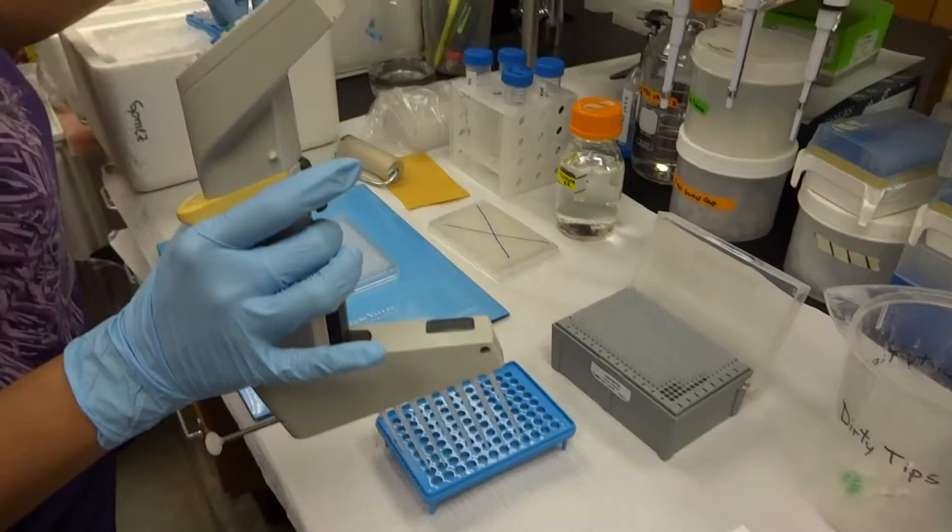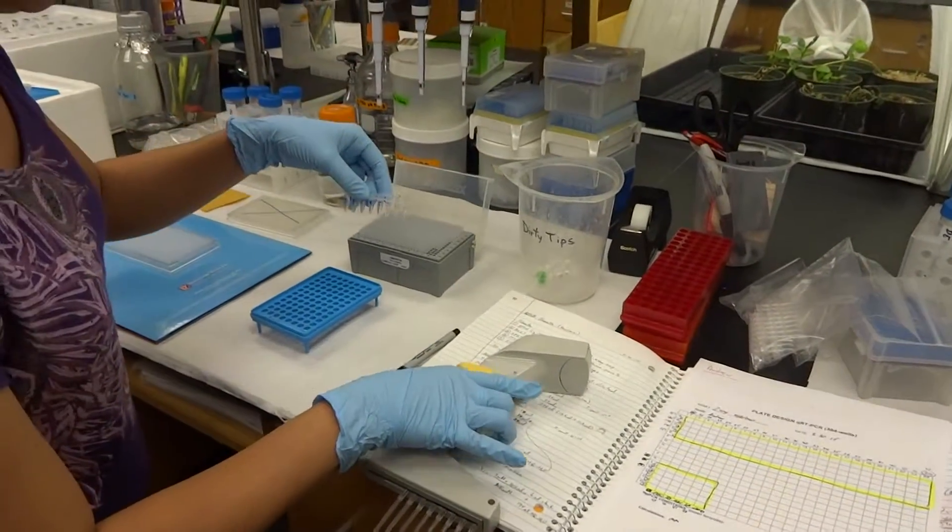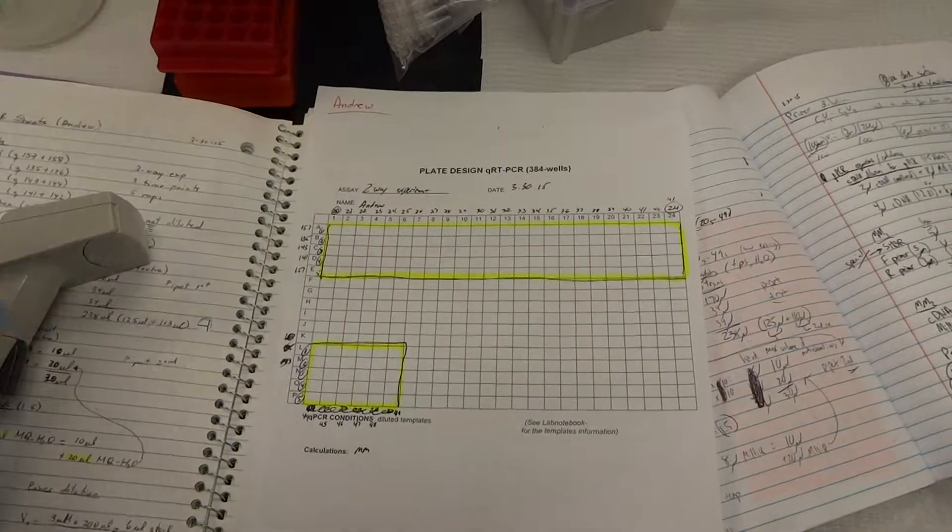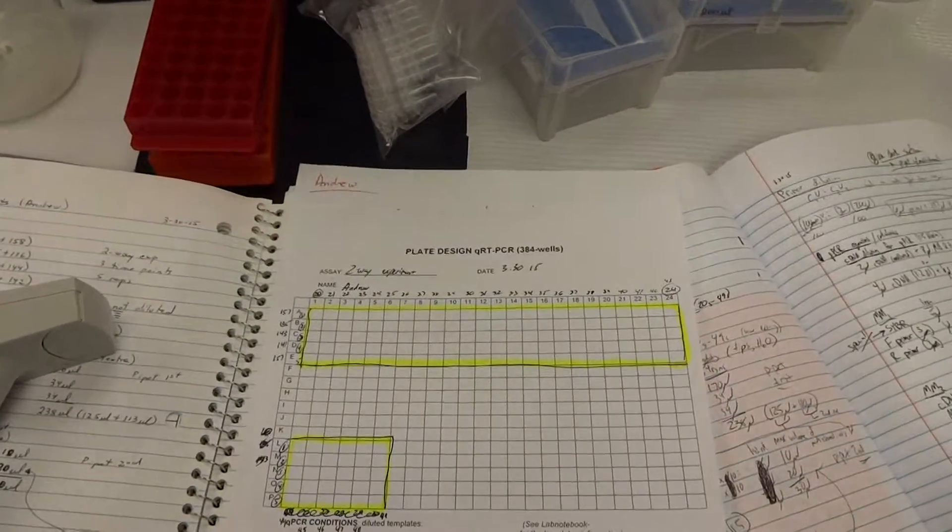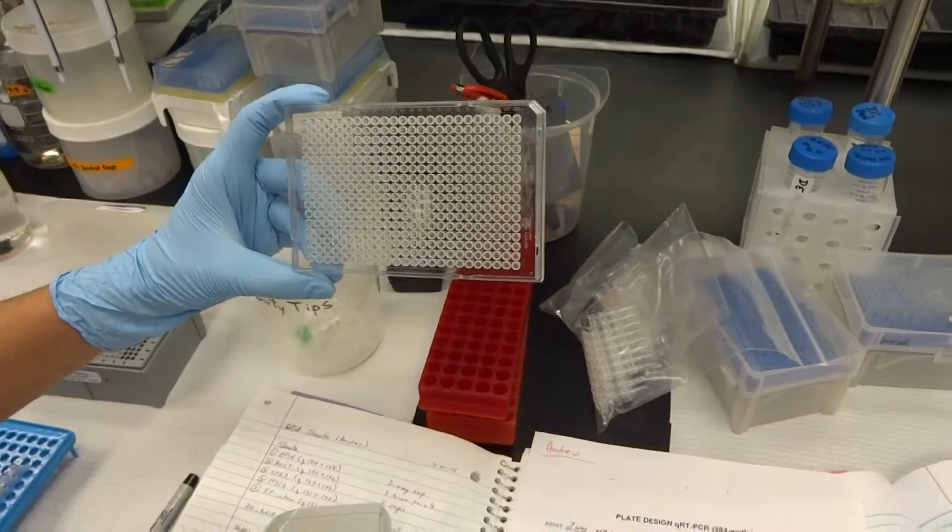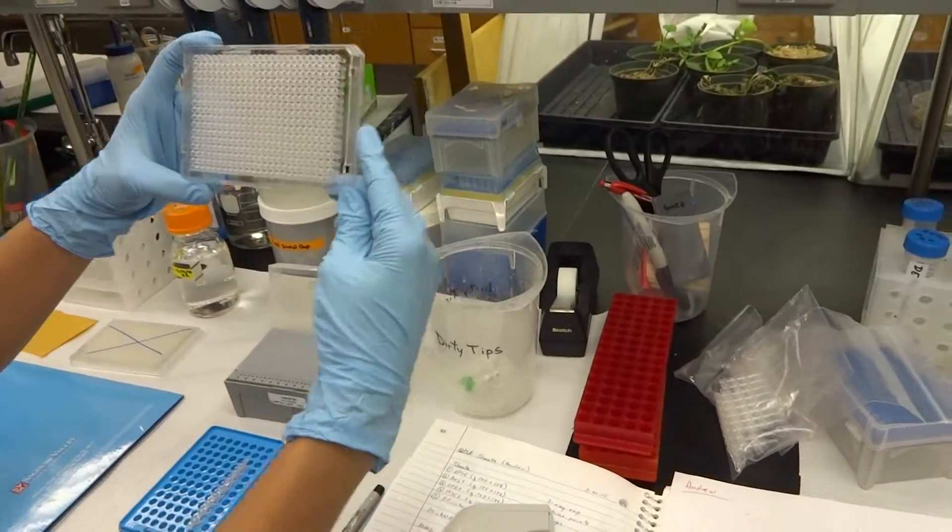So let's start with our primer master mix. We are going to pipette that way, so number 5 should be here, and this is your plate. A to P are on this side, and then you have the numbers, so this corner is your right corner.